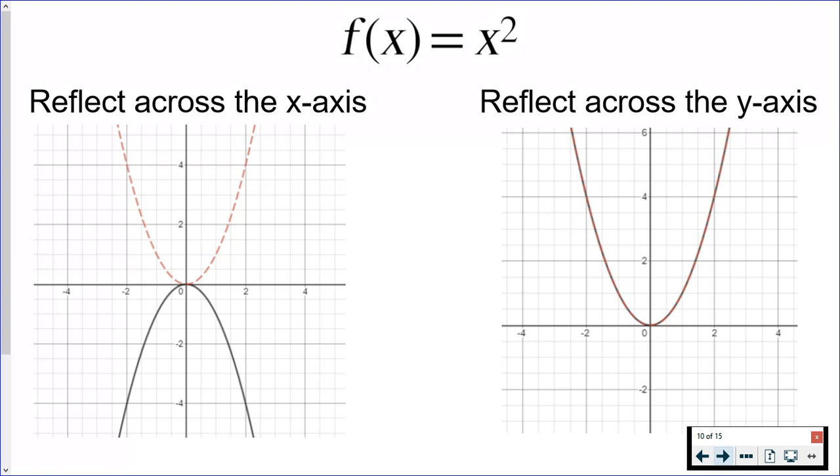A reflection across the y-axis doesn't look like anything happened because the parabola is already symmetric on either side of the y-axis. If you look hard enough, there's a black parabola and a red dashed parabola on top of each other because they look the same.